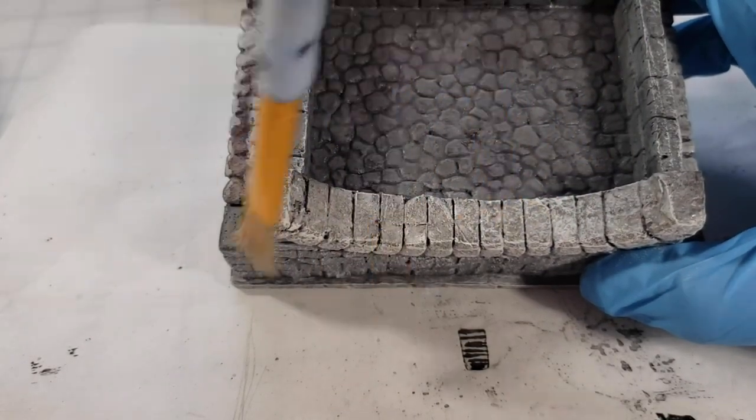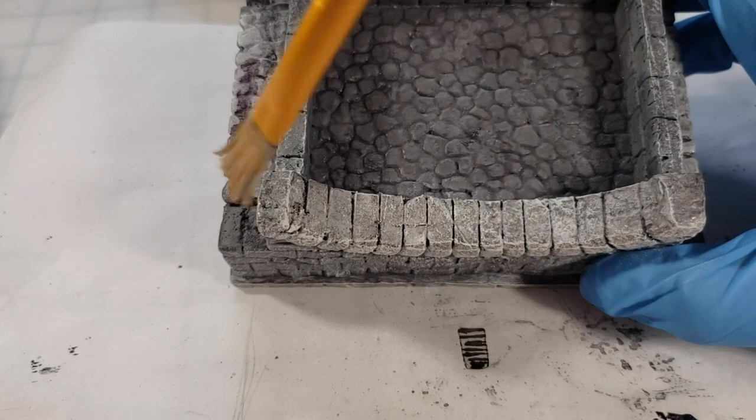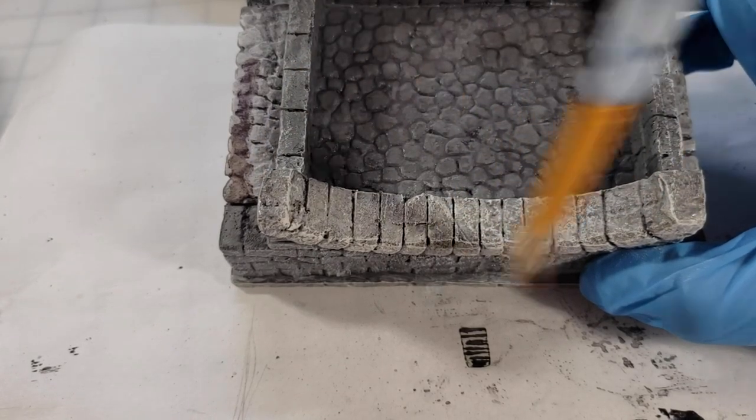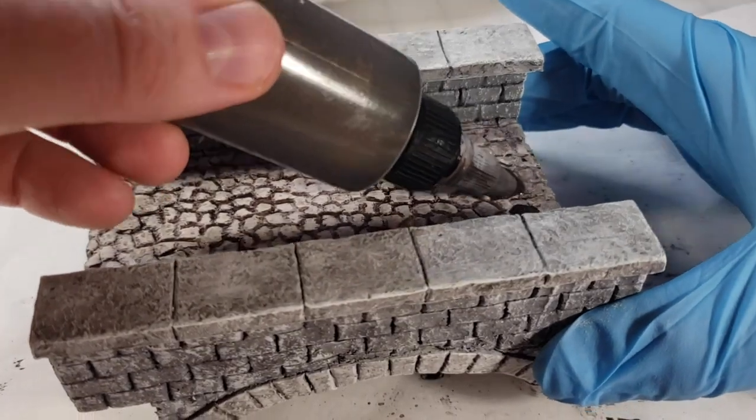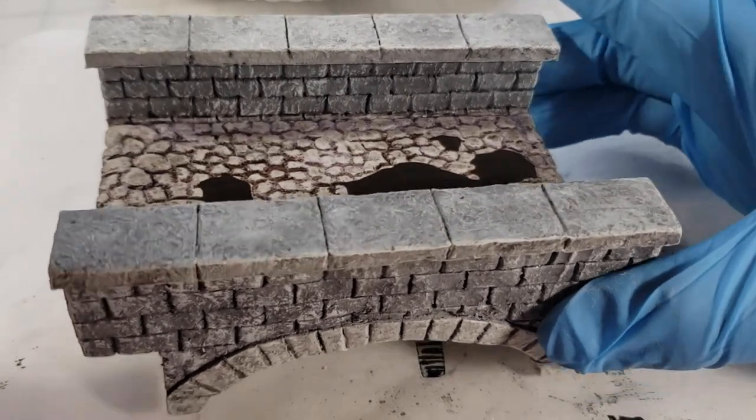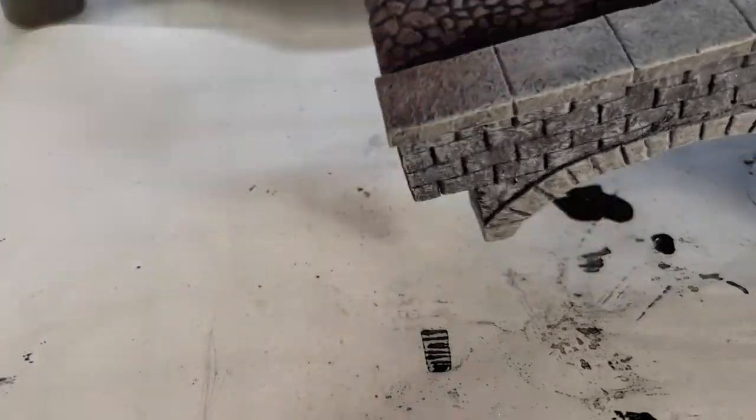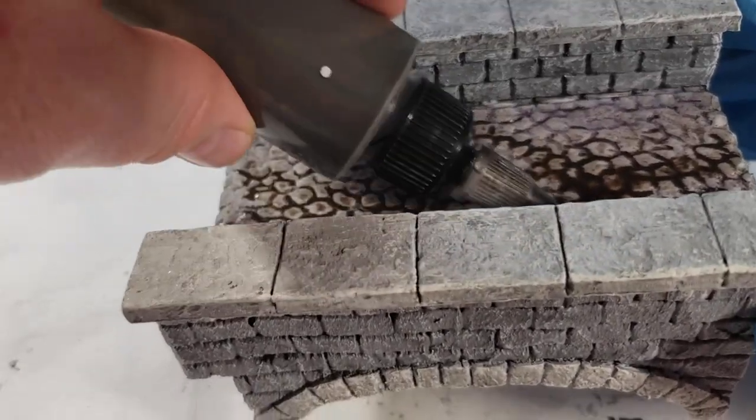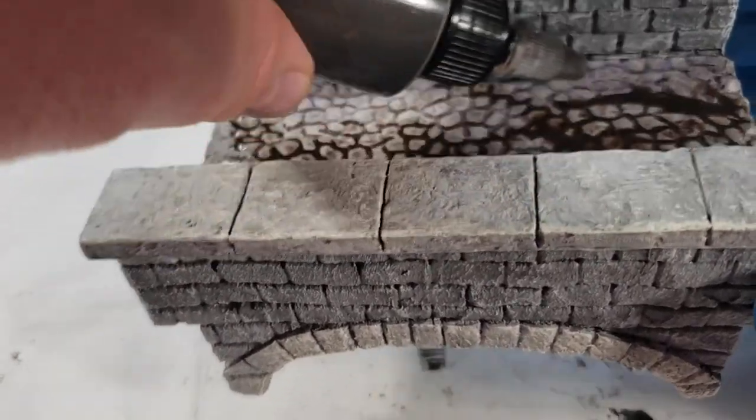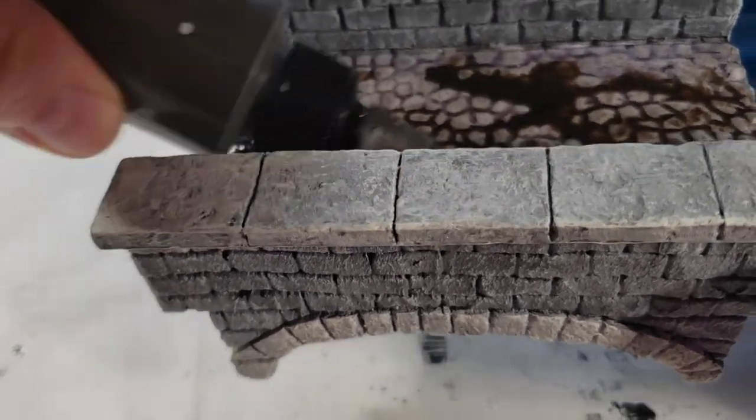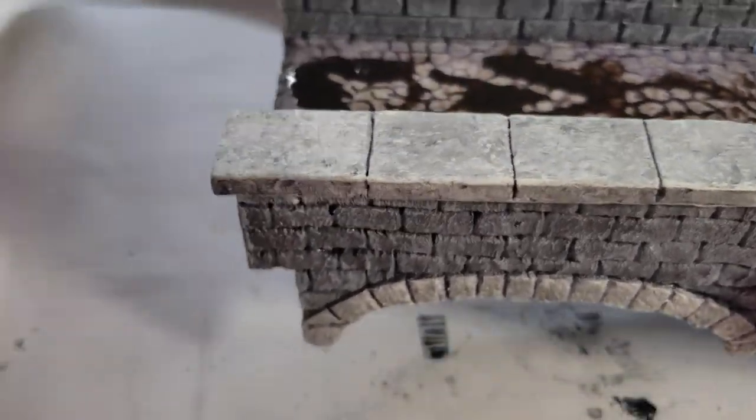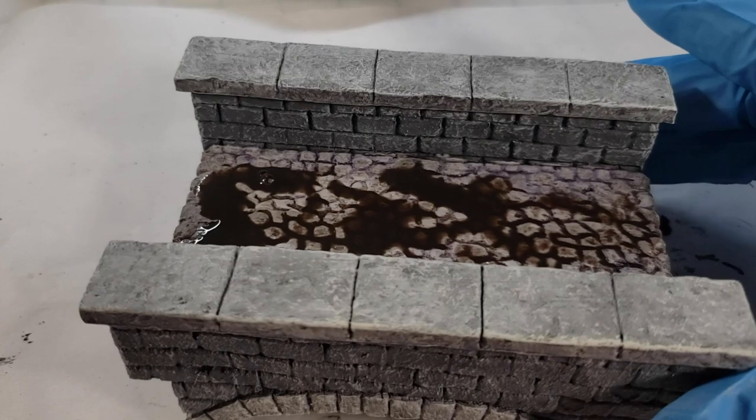Once you've finished your dry brushing it's time to apply some more washes. I'm laying another coat of brown wash on the cobblestones. It just didn't darken the way I wanted it to. So when in doubt apply more paint and apply more wash.